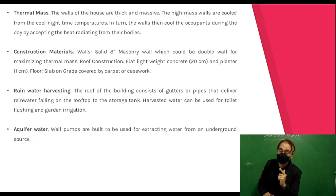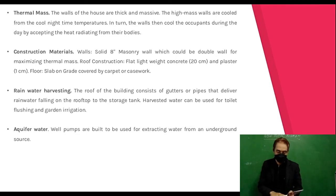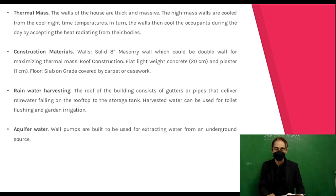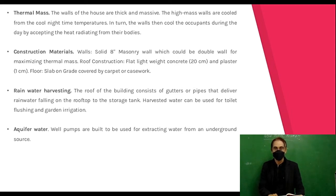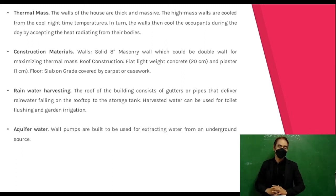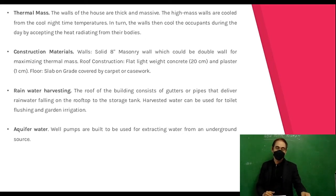Thermal mass: the walls of the house are thick and massive. The high-mass walls are cooled by cool nighttime temperatures; in turn, the walls cool the occupants during the day by absorbing the heat radiating from their bodies. Construction materials include solid eight-inch masonry walls (which could be doubled for maximizing thermal mass), flat lightweight concrete roof 20 cm thick with 1 cm plaster, and a floor slab on grade covered by carpet.